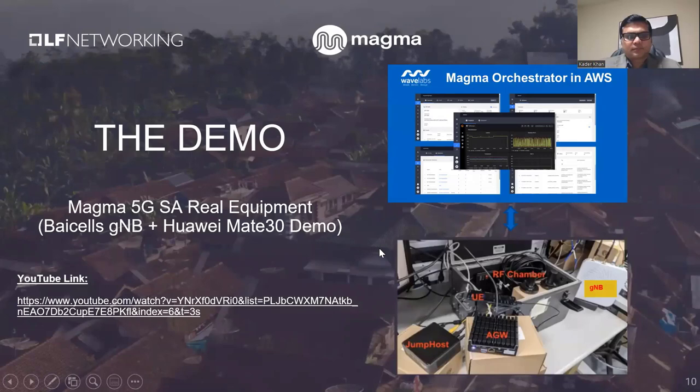The key message is that Release 1.7 MVP is already being used for various use cases and deployment scenarios. All documentation links and demos are available to help the community get started.